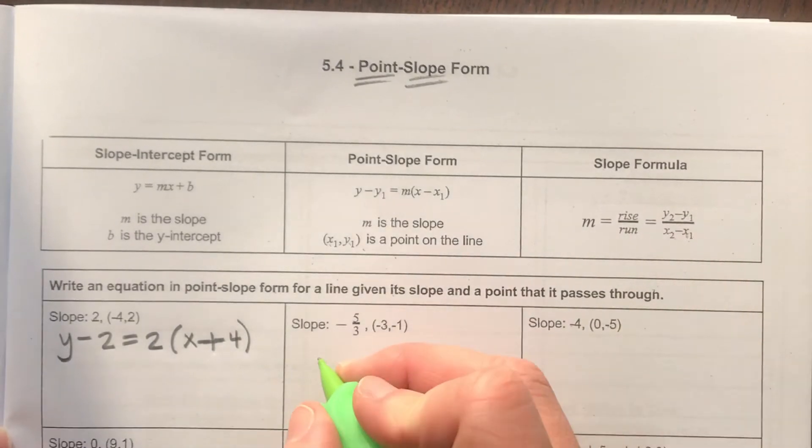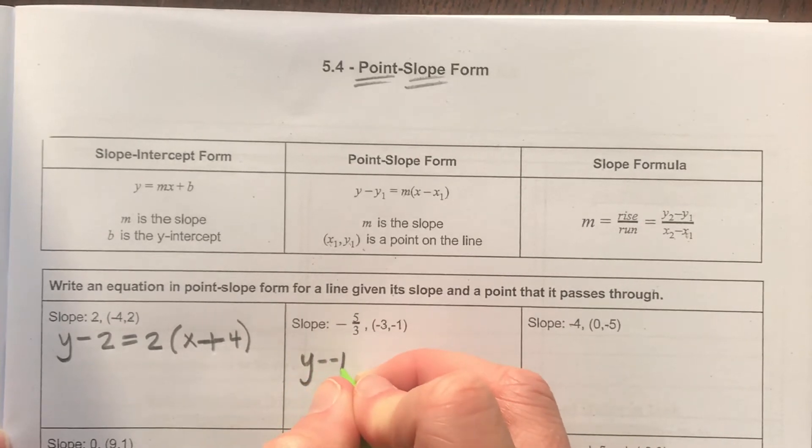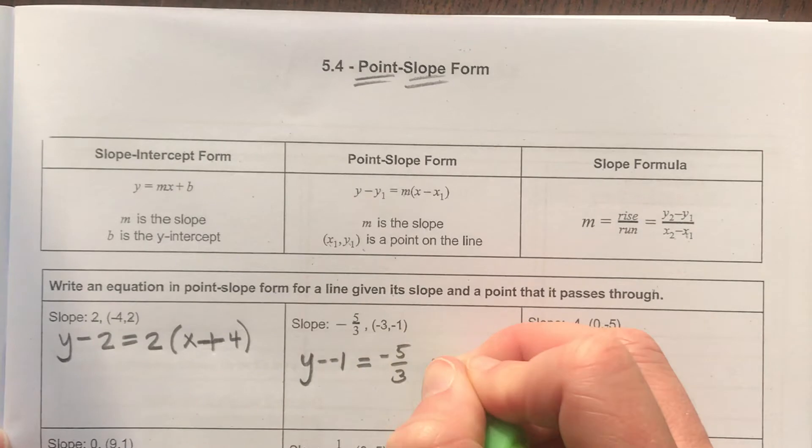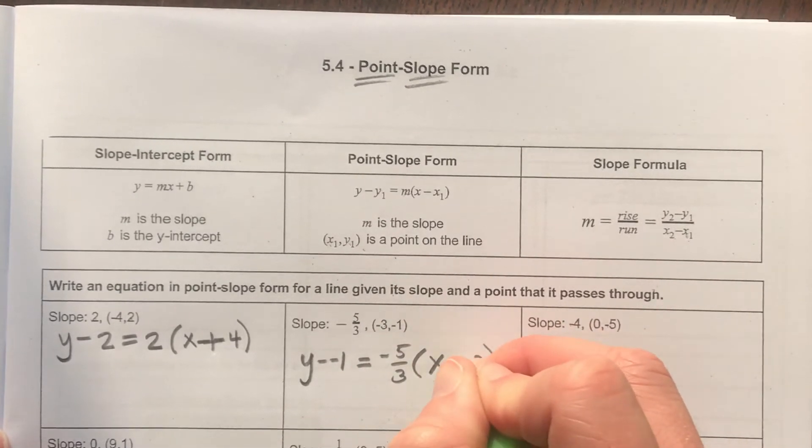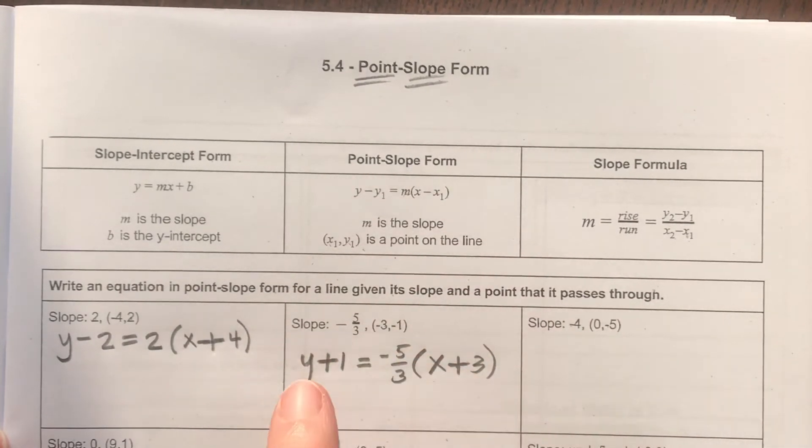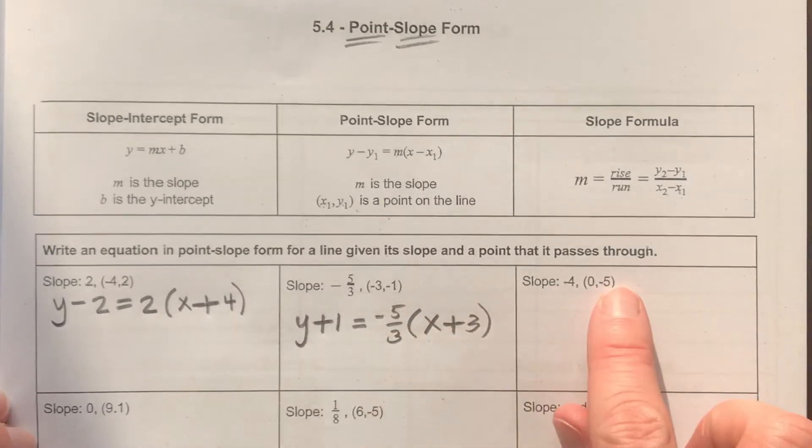So now if I use this new point, y minus negative 1 equals our slope, negative 5 over 3, and then in parentheses, x minus negative 3. This is going to also turn into a plus, minus a negative, and this minus a negative will turn into a plus, and that is your point-slope formula.